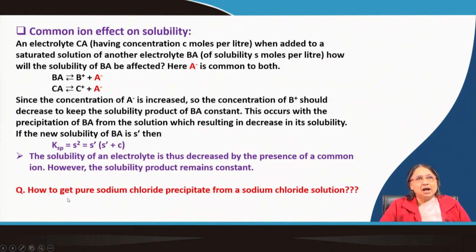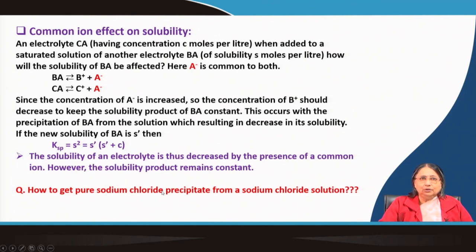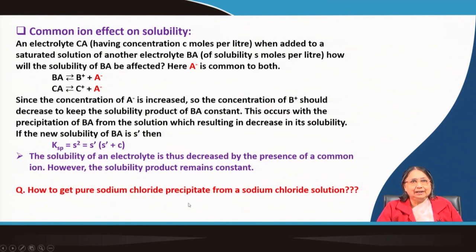An important application: how to precipitate pure sodium chloride from a sodium chloride solution. You take the concentrated NaCl solution and pass HCl gas through it. Chloride is the common ion; by adding more Cl⁻ via HCl, some sodium is driven out of solution and precipitates as pure sodium chloride.